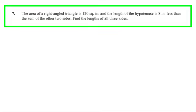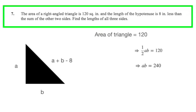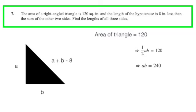Question 7 is rather interesting. First thing first, we can draw the right angle triangle, label the sides a and b, and the hypotenuse as a plus b minus 8. Since the hypotenuse is 8 inches shorter than the sum of the other two side lengths, since the area is 120 square inches, we see that half ab equals 120, which implies a times b equals 240. Now, we can form another equation using Pythagoras theorem, which says that a square plus b square equals a plus b minus 8 square. Simplifying this, we get 8a plus 8b minus ab minus 32 equals 0.